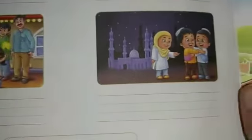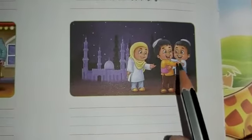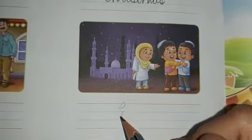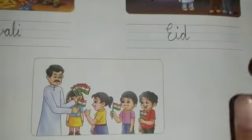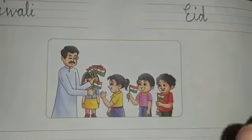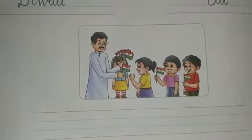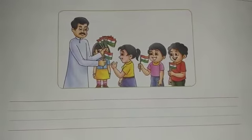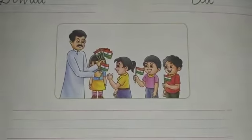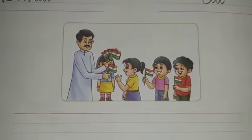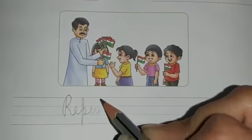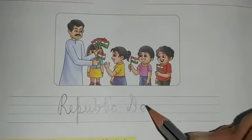After this, come on to the next one. What do you see? People are meeting and greeting each other, and you can see they are celebrating Eid. So you will write down Eid — E-I-D. Next, this man is distributing flags to all the children. We have seen this happening on Republic Day. Republic Day is on 26th of January. So we write down Republic Day — R-E-P-U-B-L-I-C Republic Day.